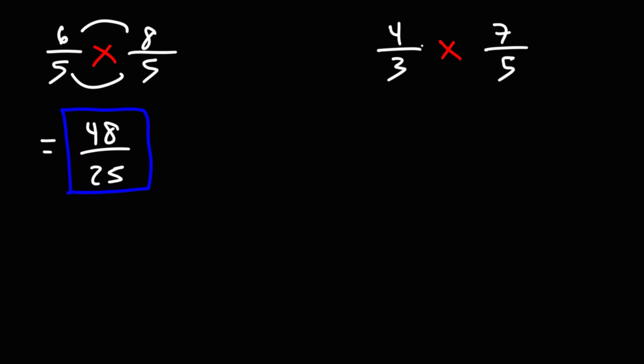For the second example, we could do the same thing. 4 times 7 is 28, 3 times 5 is 15. So we get 28 over 15.